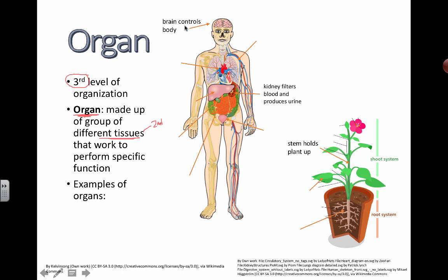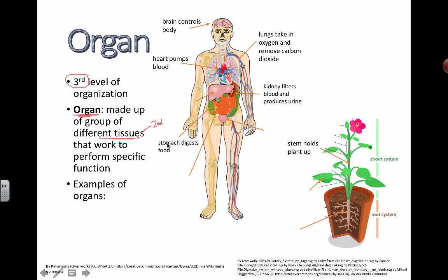Examples of organs: the brain controls the body; the heart pumps blood around the body; the lungs help us breathe — they take in oxygen and remove carbon dioxide. The stomach is where food goes in, and the bladder stores urine — that's the fancy word for you-know-what.